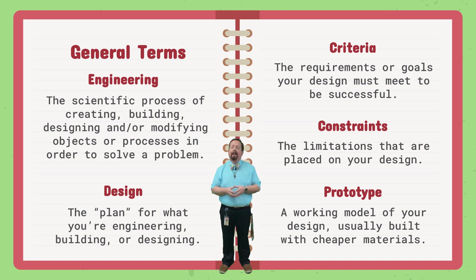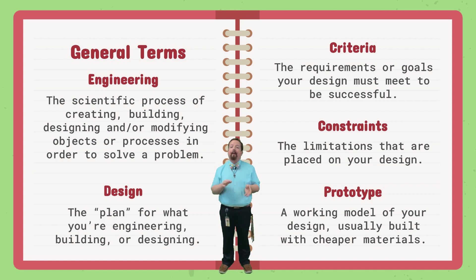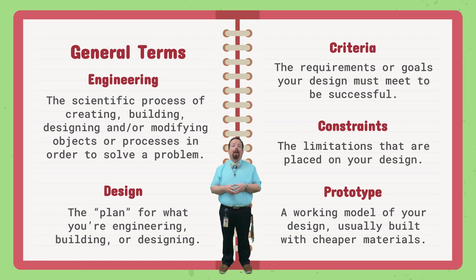Things like the material the product is made out of, the total cost, or the required dimensions are examples of constraints. Our junior high robotics team builds a new robot each year. Two of the usual criteria are that it has to be able to pick up and manipulate game pieces on the playing field. The constraints are that we can only use six motors, we have to use a specific brand of pieces, and it can't exceed the dimensions in the rulebook. If we don't fit within those constraints, we can't even use the robot in competition.